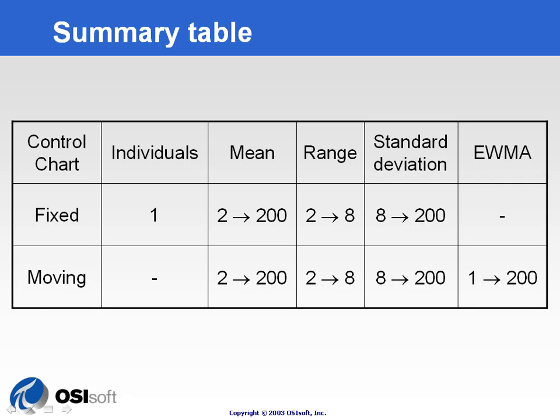Fixed sampling is better but has a drawback of you have to wait for values. Moving sampling, there is more calculation being done, is more up-to-date, but there could be propagation effect.